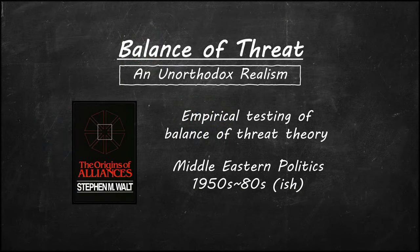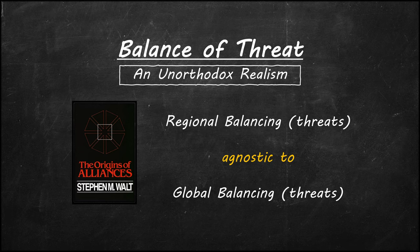Before finishing, there is one other thing about the balance of threat theory worth noting. Walt spends most of his book testing the balance of threat theory against the empirical cases of Middle Eastern politics between the 1950s and 1980s. He tests several hypotheses arising from the balance of threat theory by looking at how Middle Eastern states formed alliances. One of the most interesting conclusions is that regional balancing of threats is mostly agnostic to global balancing of threats. Middle Eastern states did not form alliances based on which superpower — the United States or the Soviet Union — was most threatening at the global scale.